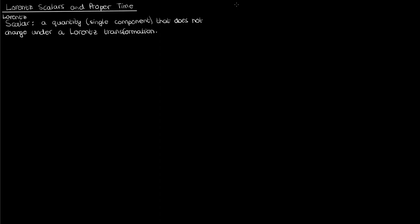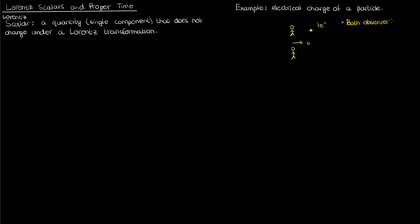Some classic examples of Lorentz scalars include the electrical charge of a particle. If a particle's charge equals that of one electron — approximately 1.6 times 10 to the negative 19 coulombs — then an observer at rest with respect to that particle will measure that charge as one electron. An observer moving at a constant velocity v will also measure the same charge in their reference frame. There's no reason for a particle's charge to change when measured in a different inertial reference frame.